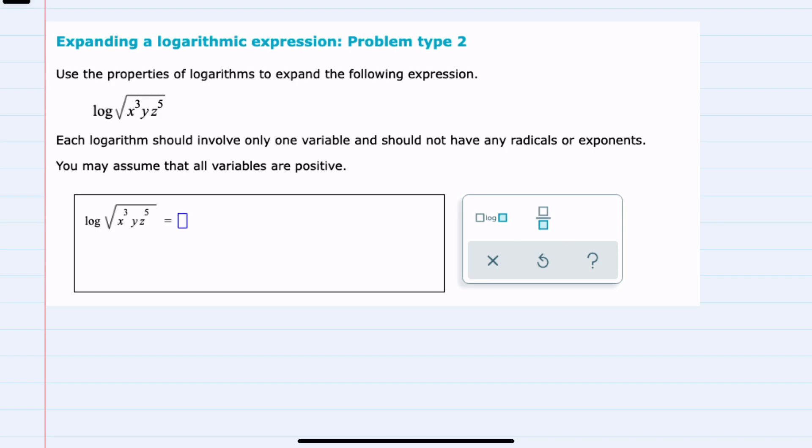Here we're expanding the log of the square root of x to the third, y, z to the fifth, with each logarithm involving only one variable and no radicals or exponents.